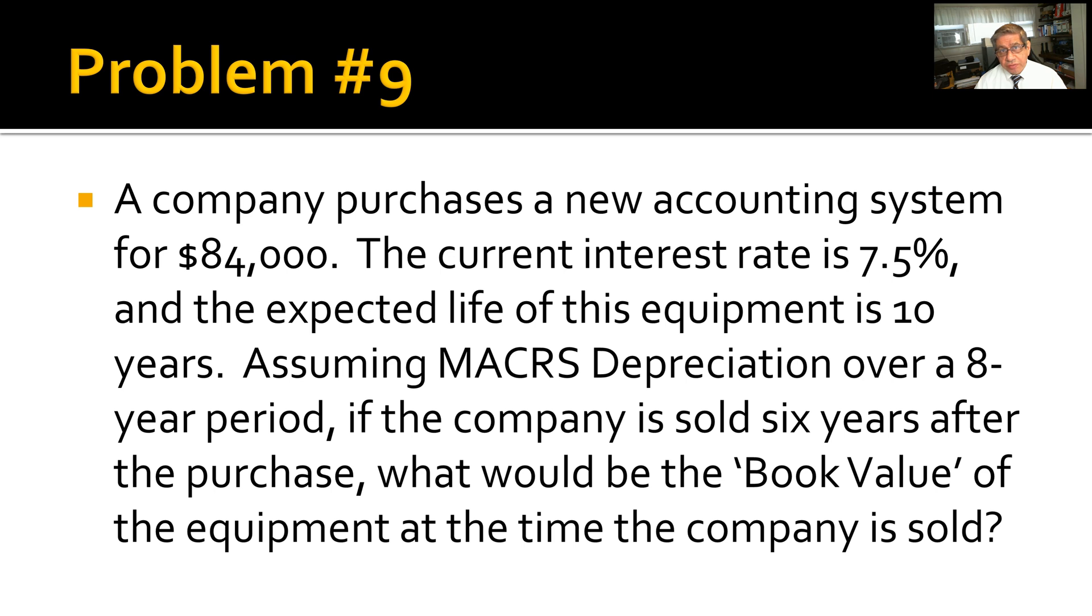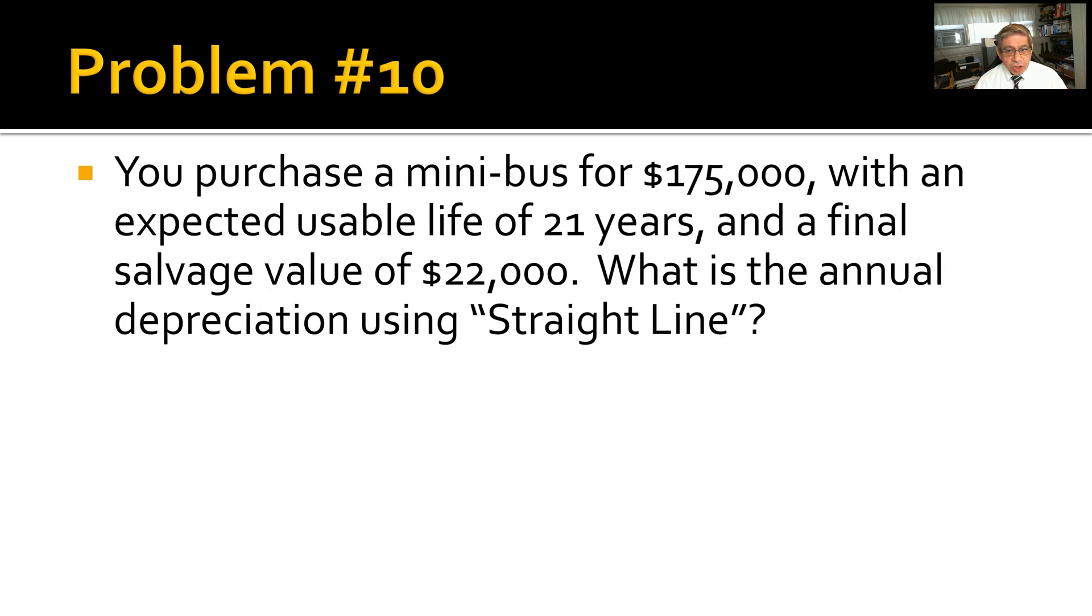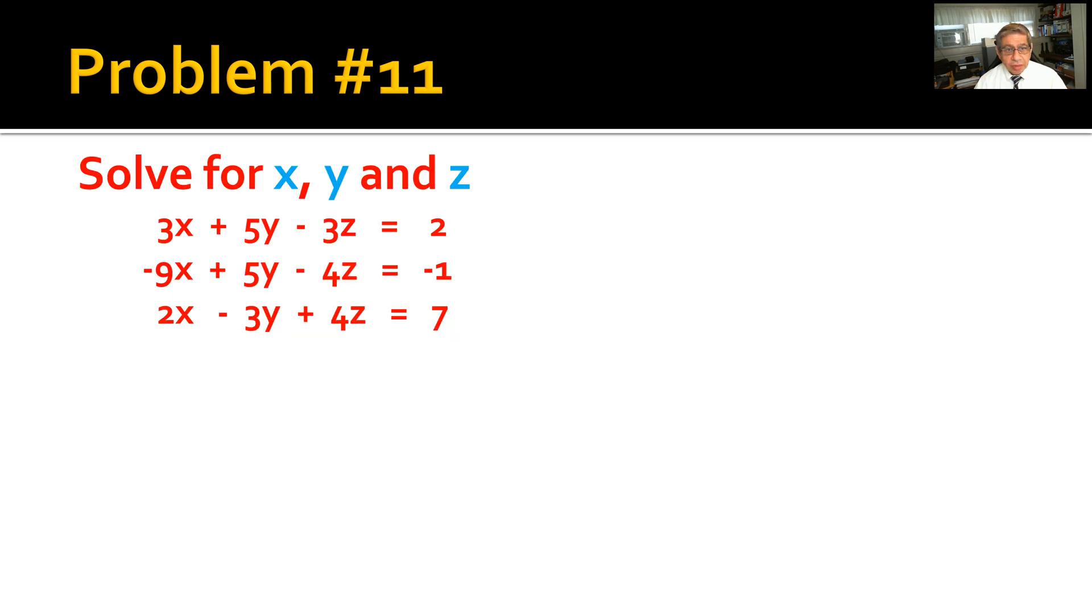Problem number 10: You purchase a minibus for $175,000 with an expected usable life of 21 years and a final salvage value of $22,000. What is the annual depreciation using straight line?